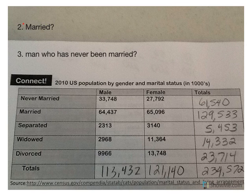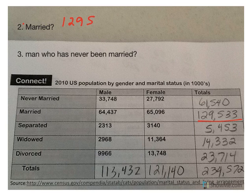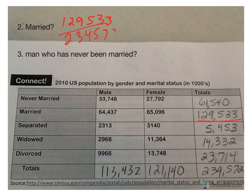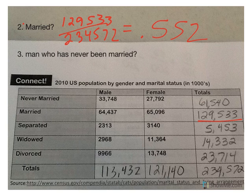I am abbreviating these sentences quite a bit. Number two, the probability of randomly selecting a U.S. citizen who is married. We look at how many are married — we've got 129,533 over the total of 234,572, and when you divide those, we come up with a decimal of .552.